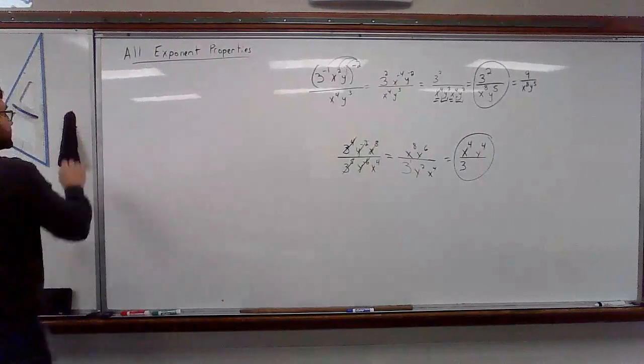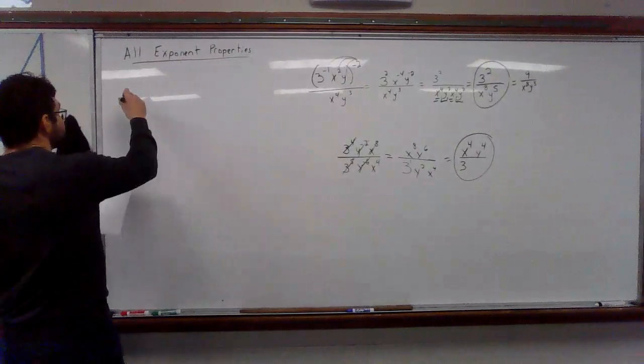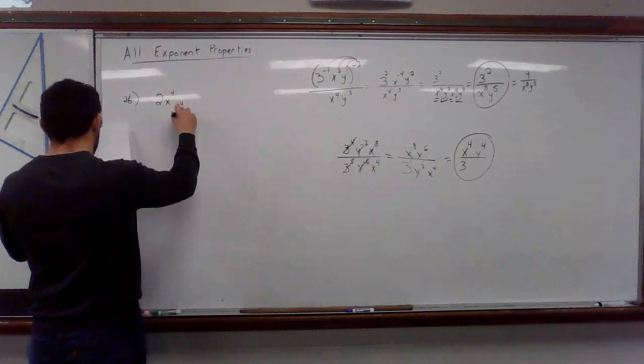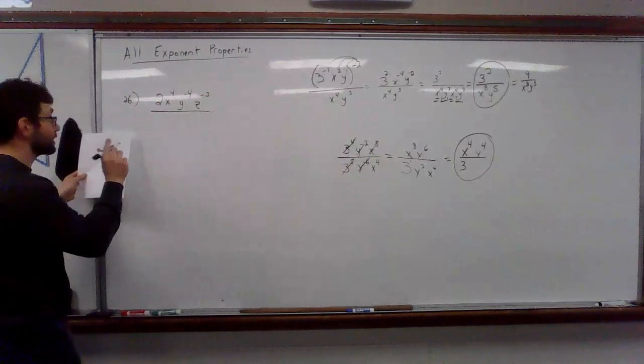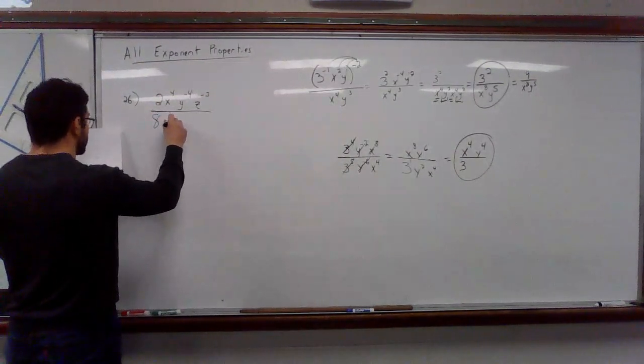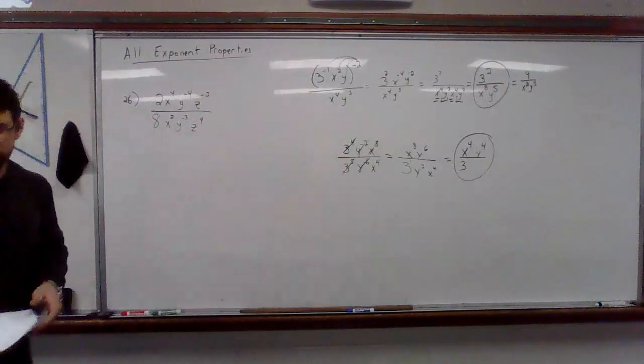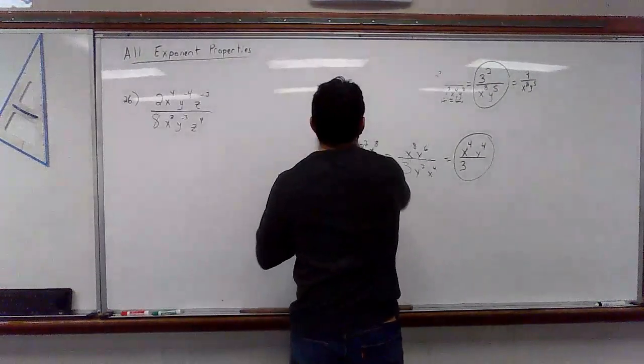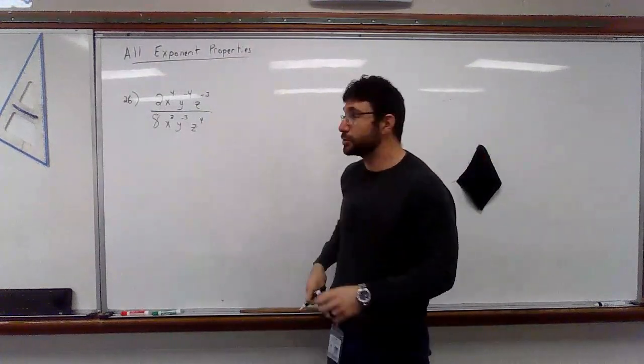So, let's take a look at some of the ones on your worksheet that you'll have. So, let's take a look at number 26. So, I've got two, X to the fourth, Y to the negative fourth, Z to the negative third. And I'm going to switch it up a little bit because I want to kind of teach you one other thing. I want to make that X. Eight X squared, Y to the negative three, Z is the fourth. Okay. Here we go. Let's get some room. As long as you break it down into small sections, you should be fine.